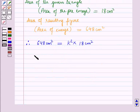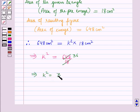This implies k squared equals 648 divided by 18. Since 18 times 36 equals 648, this means k squared equals 36.